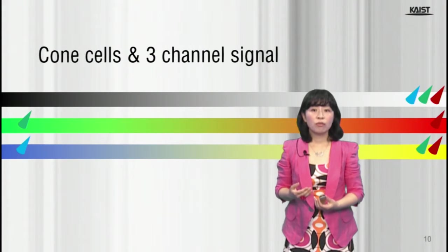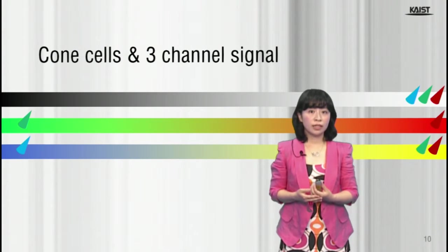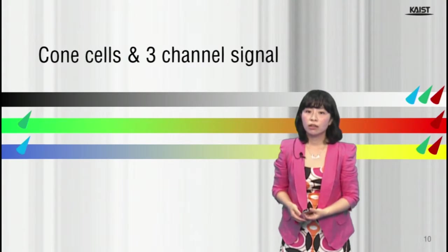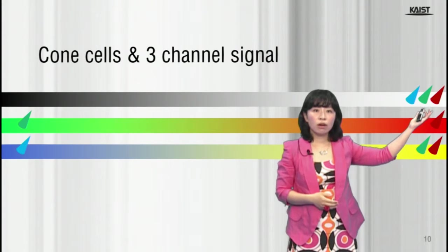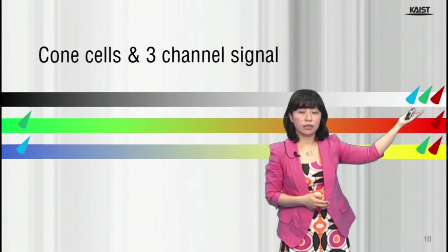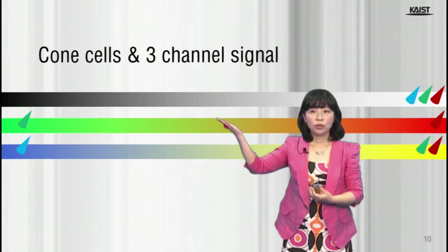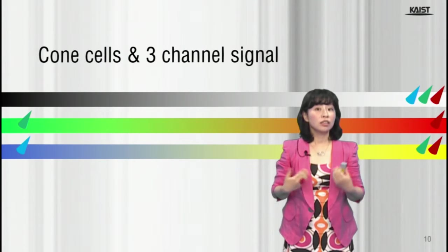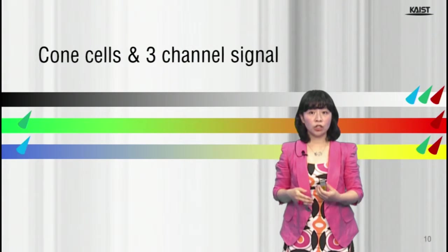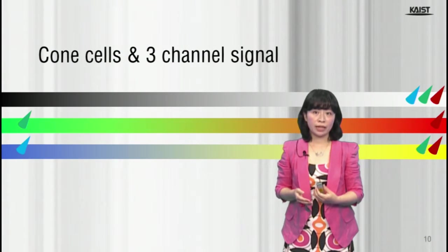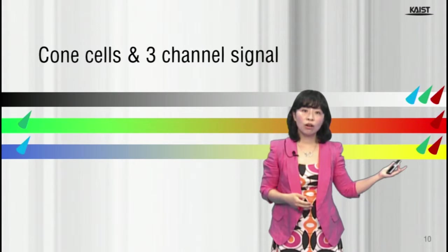The interaction of three cones results in opponent signals. One channel is related to brightness. All three cones are involved in this. More importantly to see colors, the other two channels are directly related. The color signal is formed in terms of two aspects: one is red or green, and the other is yellow or blue.